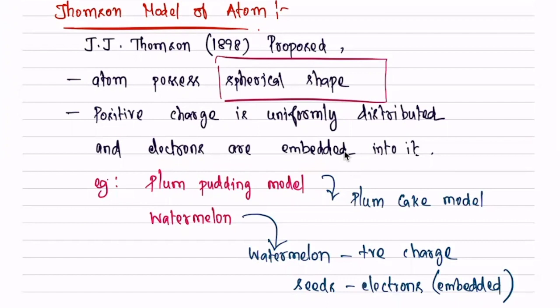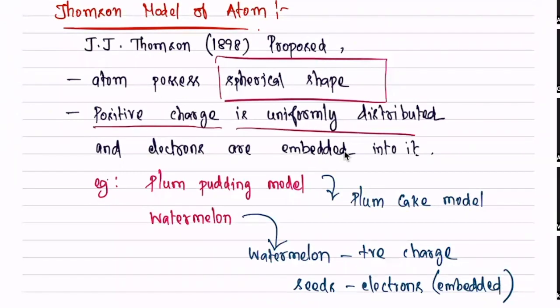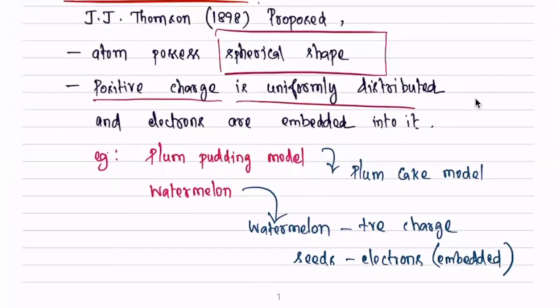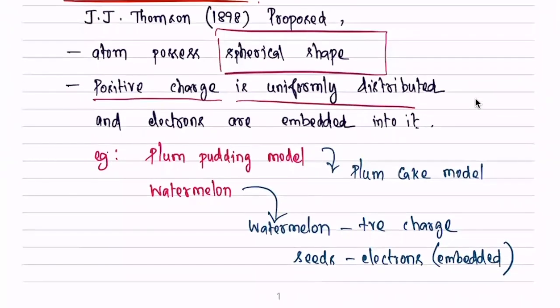Now we look at Thomson's model. The assumption is that if there is an atom, it is spherical in shape. The positive charge is uniformly distributed throughout the sphere. The electrons are embedded into it. This is the plum pudding model.